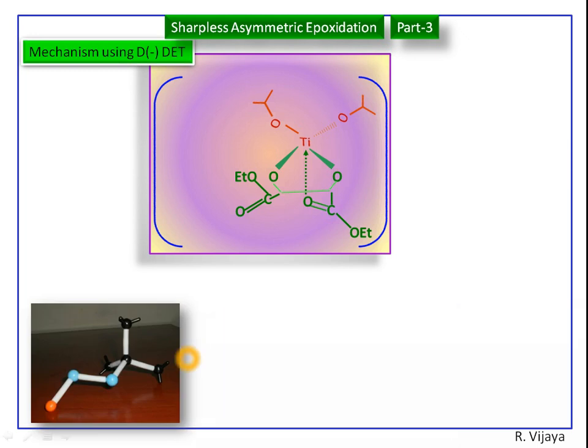This is tertiary butyl hydroperoxide. Here one of the isopropoxide groups is replaced by tertiary butyl hydroperoxide. We have a new complex.